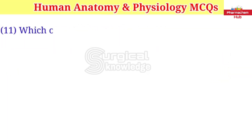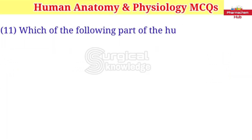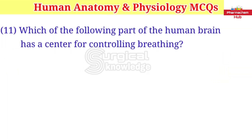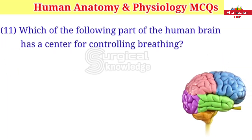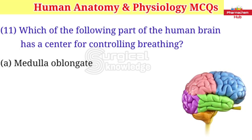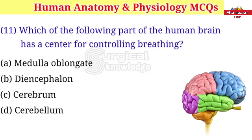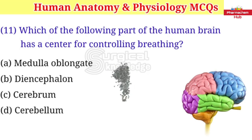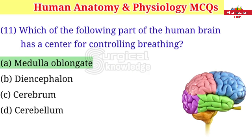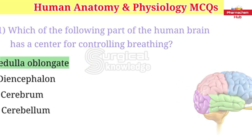Which of the following part of the human brain has a center for controlling breathing? A. Medulla oblongata B. Diencephalon C. Cerebrum D. Cerebellum. Right answer is medulla oblongata.